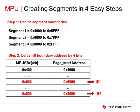Now let's learn how to configure the MPU in four easy steps. The first step involves deciding on segment boundaries. This is fully dependent on the application. For the purposes of this lab, we will use the arbitrary locations shown on the slide.